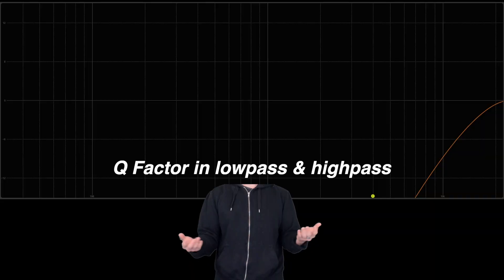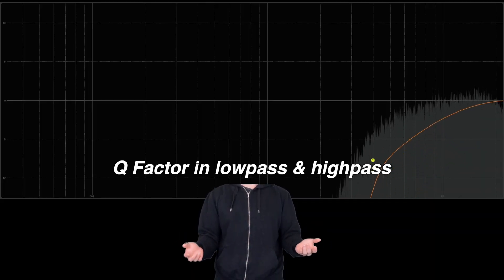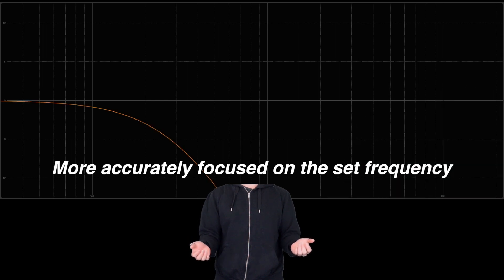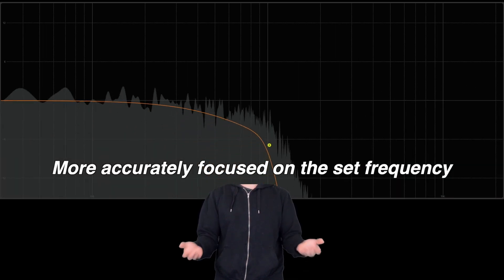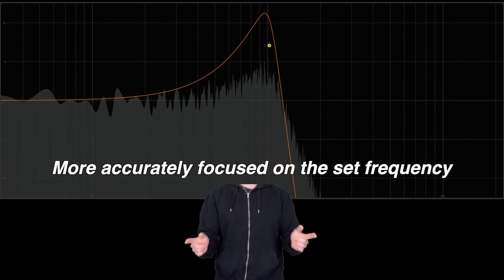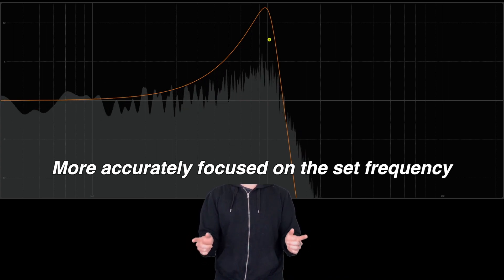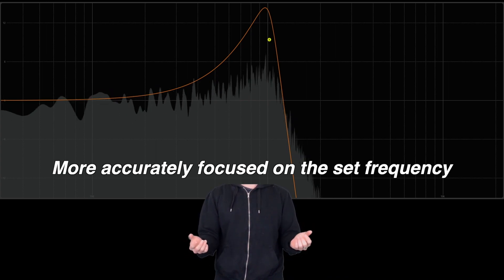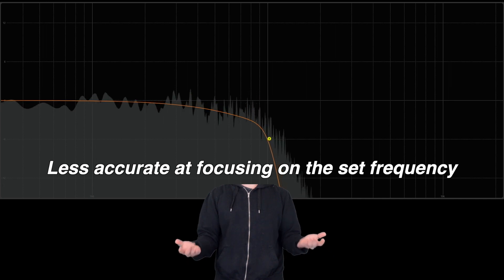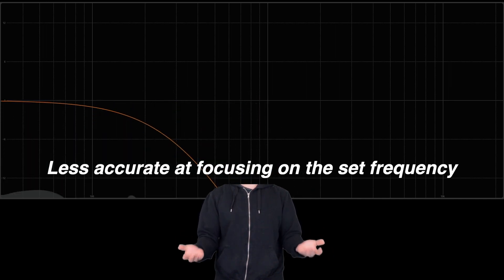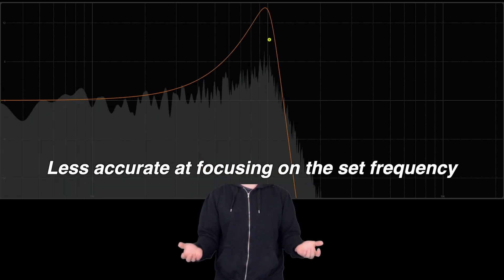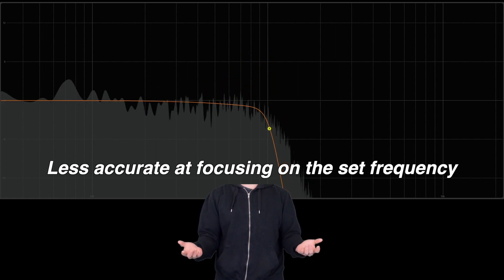And low-pass and high-pass filters can have the Q factor parameter as well. When we increase the Q factor in the low-pass filter, we see the cutoff frequency becoming more and more amplified and focused. And when the Q factor is lowered, the filter is less selective and filtering a wider range of frequencies, as we can see and hear.